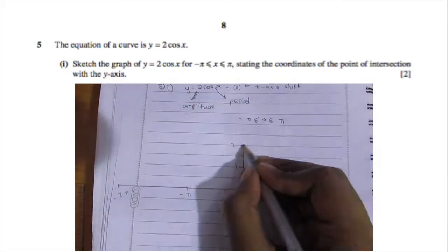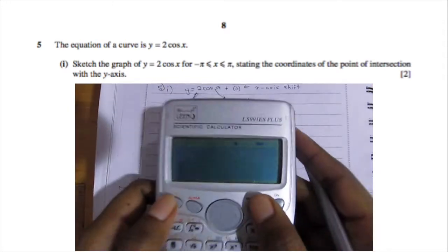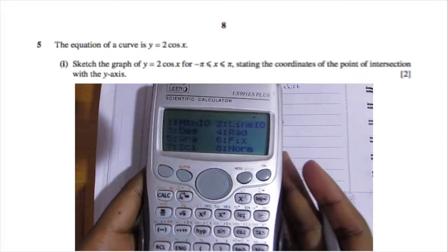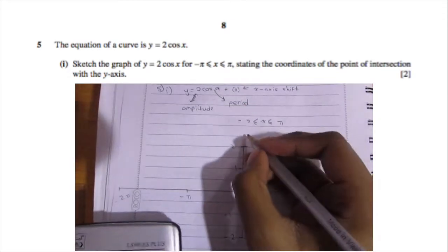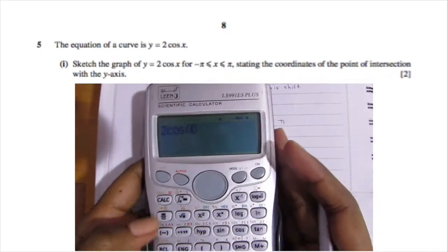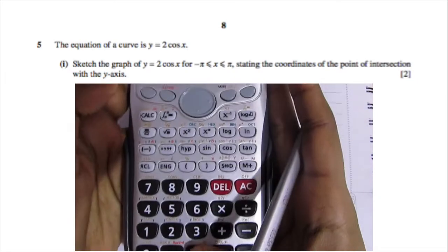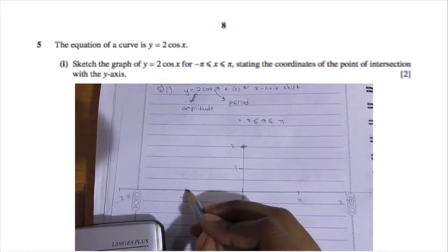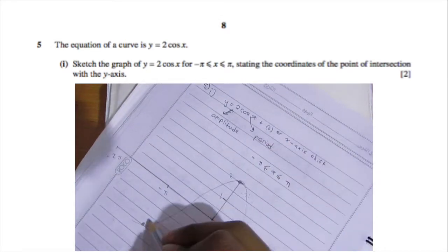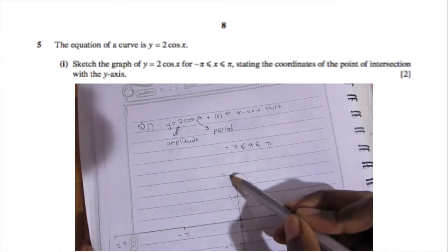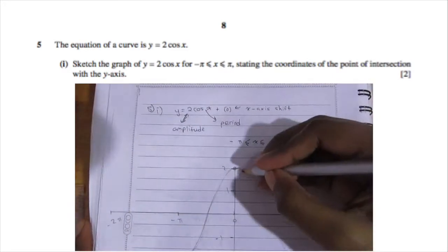Now we just need to sketch it out — use a ruler and pencil. We need it between negative pi and pi. We're going to use radians in the calculator, not degrees, because that's what the question asks for. So 2 cos 0 gives the first point at 2. Then 2 cos(−π) is the same as 2 cos(π), just at opposite ends — both give negative 2. Sketch the continuous curve, pressing lightly with the pencil so you can erase if needed.